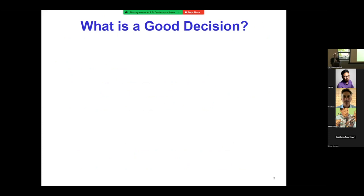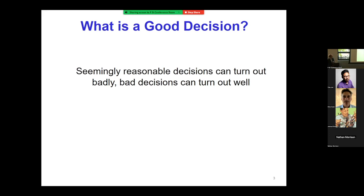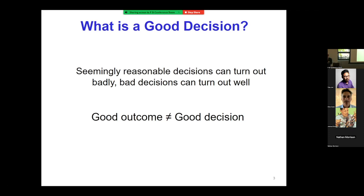What is a good decision? This is a deceptively hard question. Has anybody ever raised a teenager? Seemingly reasonable decisions can turn out badly, and bad decisions can turn out well. You would like to on average get good outcomes, but a good outcome doesn't necessarily mean a good decision.